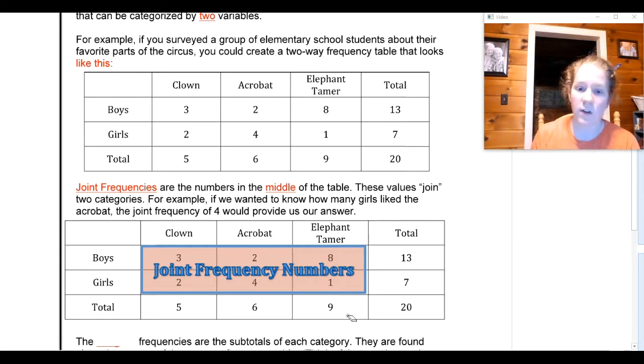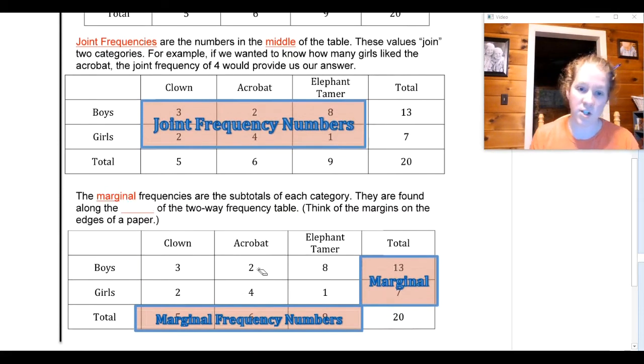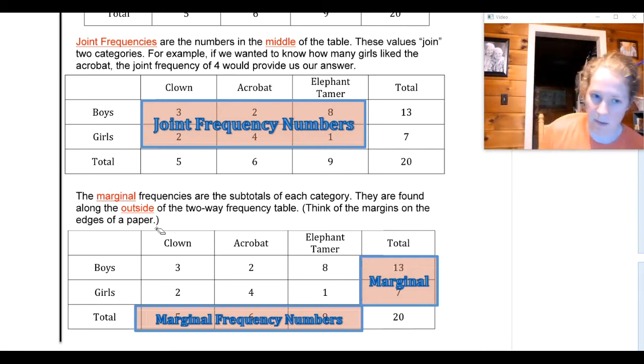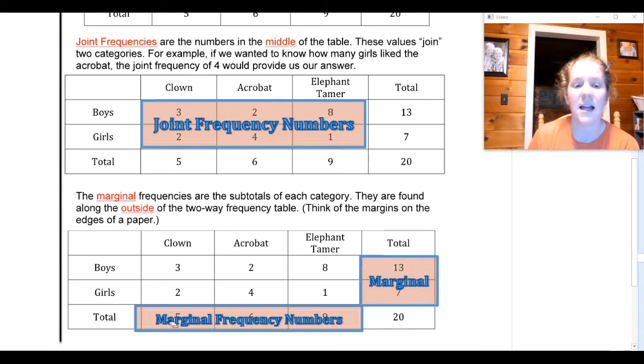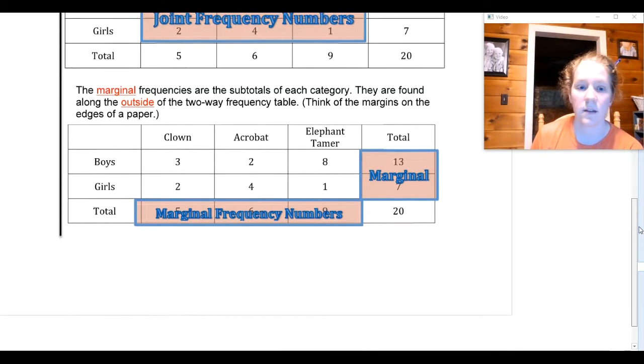The subtotals over here and your major total here are called marginal frequencies. They're found along the outside of the two-way tables, kind of like the margins on a paper when your English teacher tells you to have one-inch margins. These are subtotals. This is the subtotal of number of kids that liked elephant tamers the best and there were a subtotal of six kids that liked acrobats the best. This one is also considered a marginal frequency. It is your grand total. This is how many kids were polled in this survey.